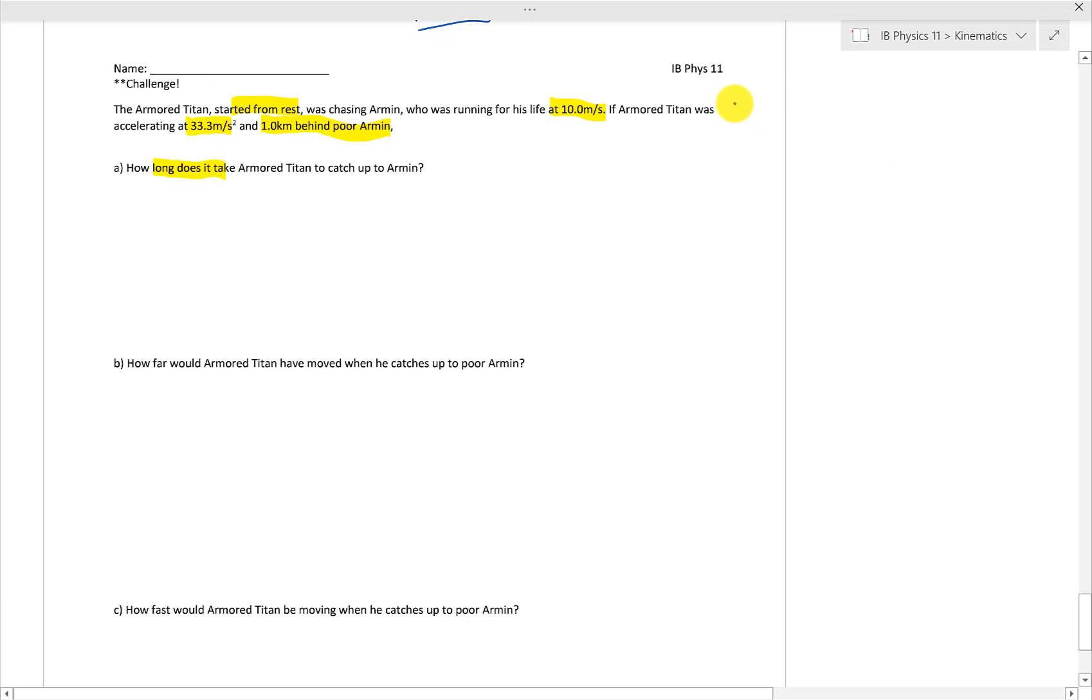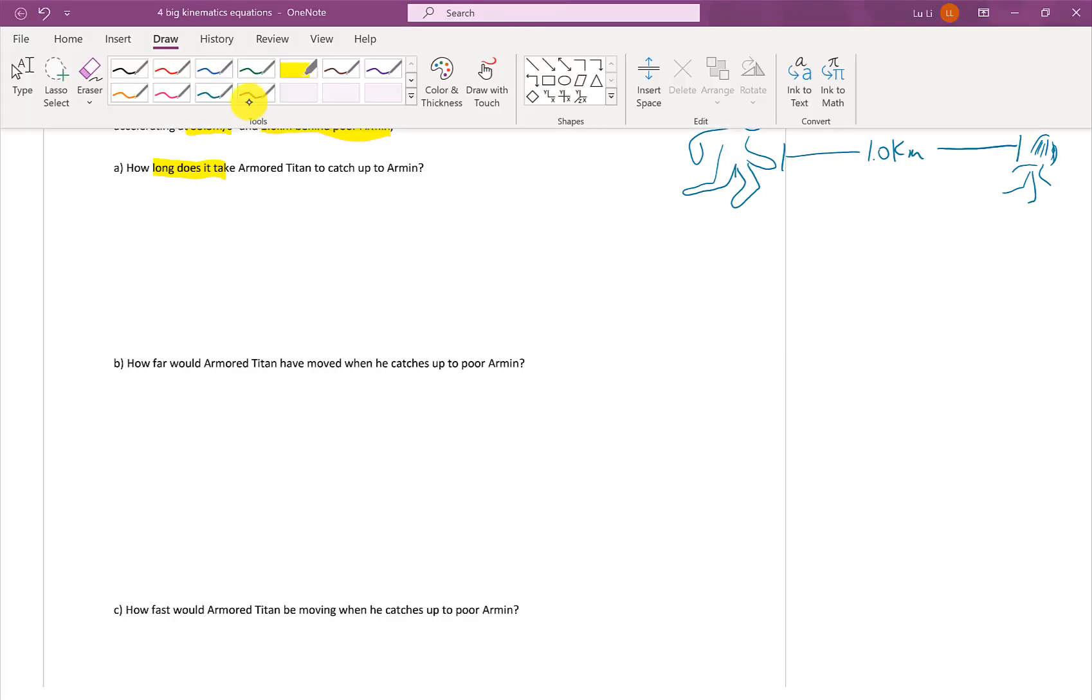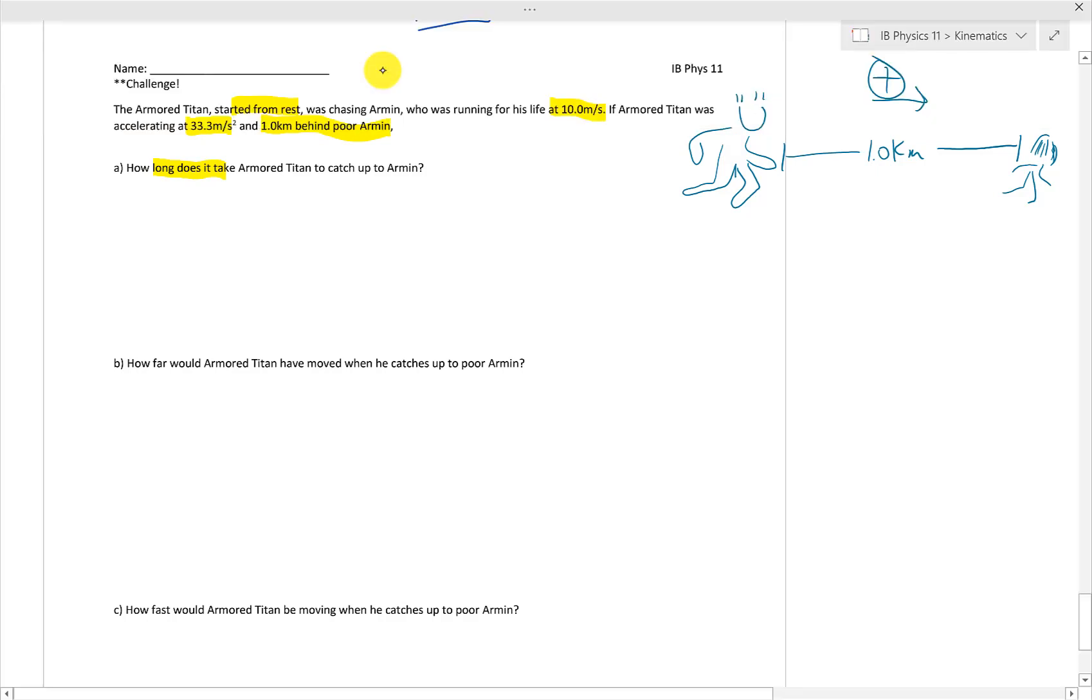I'm going to run out of space, I'm going to draw this picture over here. So we have an Armored Titan, and it's running after Armin, so let's put the Titan here. And this Titan is going to chase after Armin, which is only one kilometer away from him, poor Armin. I'm going to put this direction as my positive direction.